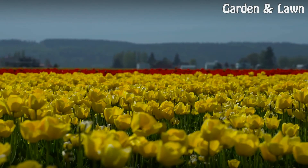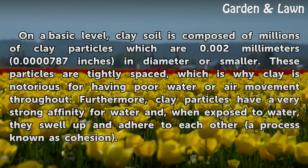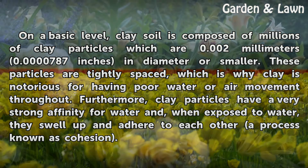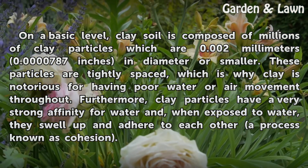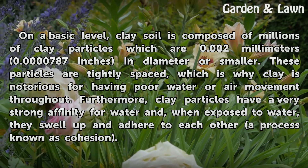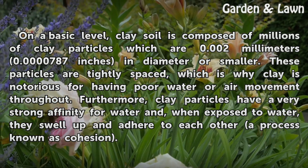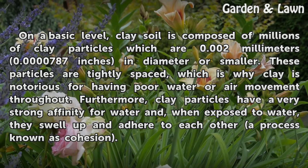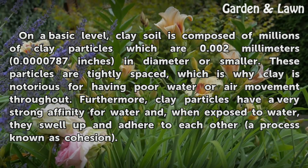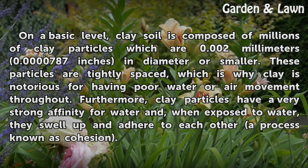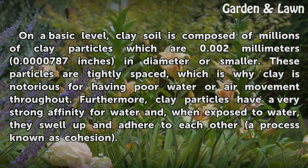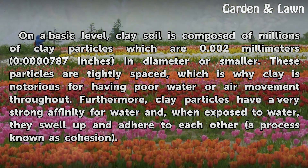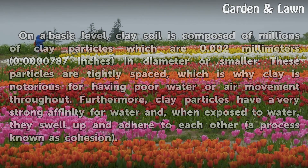Basics. On a basic level, clay soil is composed of millions of clay particles which are 0.002 mm (0.0000787 in) in diameter or smaller. These particles are tightly spaced, which is why clay is notorious for having poor water or air movement throughout. Furthermore, clay particles have a very strong affinity for water and, when exposed to water, they swell up and adhere to each other — a process known as cohesion.